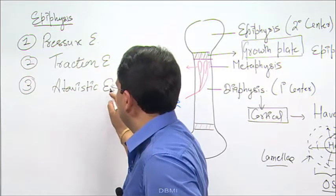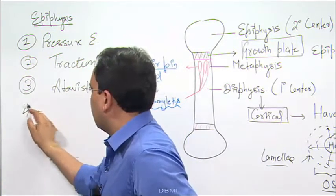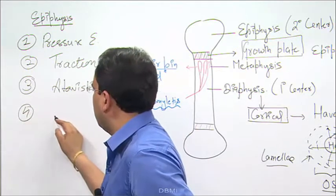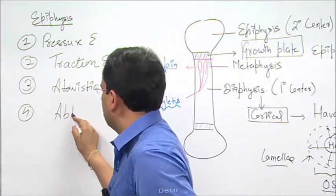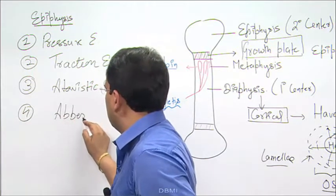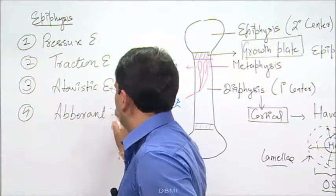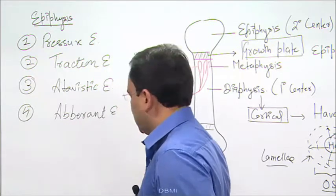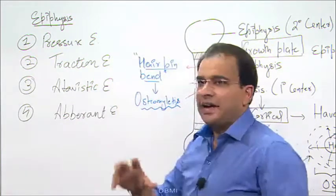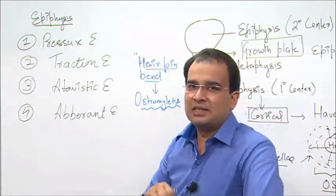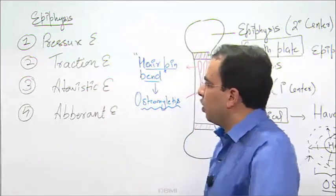Atavistic epiphysis and finally, aberrant epiphysis. These are four kinds of epiphysis that you may see in a long bone.